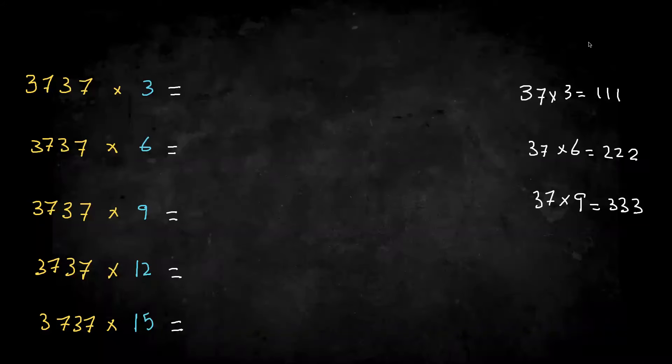Hi again, this is Sammy. So last video, we dealt with 37 multiplied by the multiples of threes. So 37 times 3, 37 times 6...